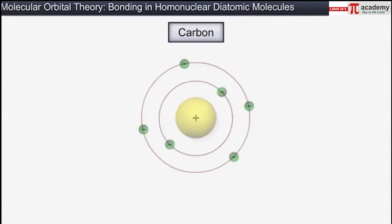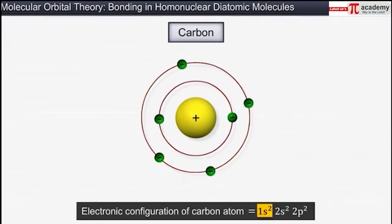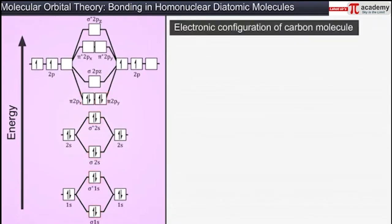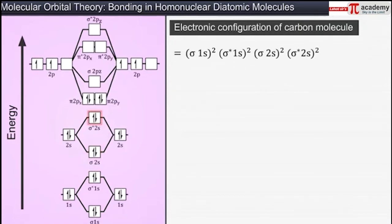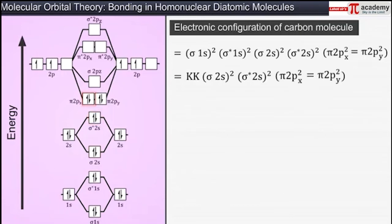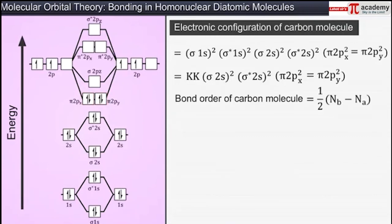Now we will see the bonding in another diatomic molecule: carbon. An atom of carbon has an electronic configuration of 1s² 2s² 2p², which makes a total of 12 electrons in a carbon molecule. The electronic configuration of a carbon molecule is sigma 1s² sigma star 1s² sigma 2s² sigma star 2s² pi 2px² pi 2py². The bond order of carbon is calculated as half of (8 minus 4), which equals 2.